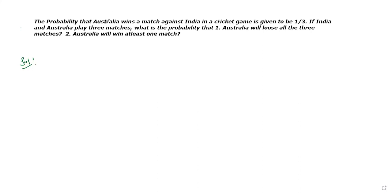The probability that Australia wins a match against India in a cricket game is given to be 1 by 3. If Australia plays three matches, what is the probability that Australia will lose all the three matches?